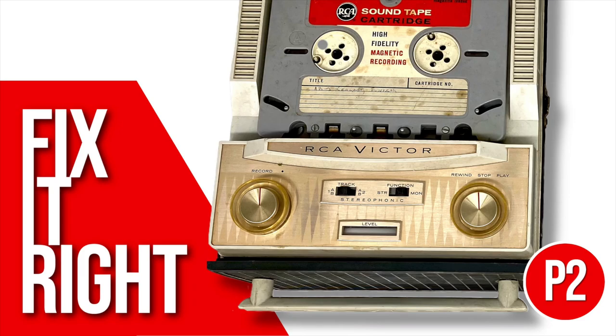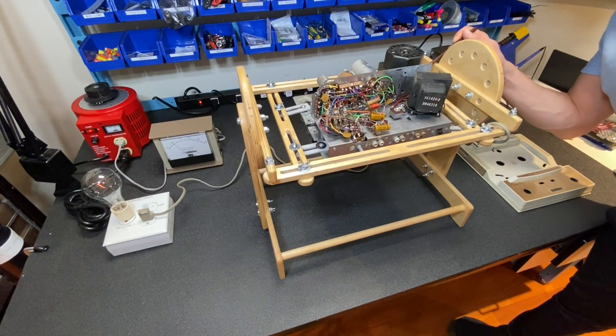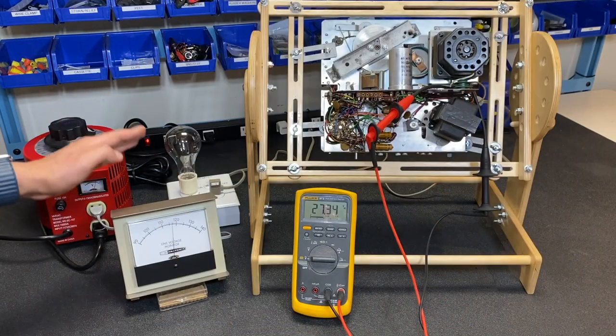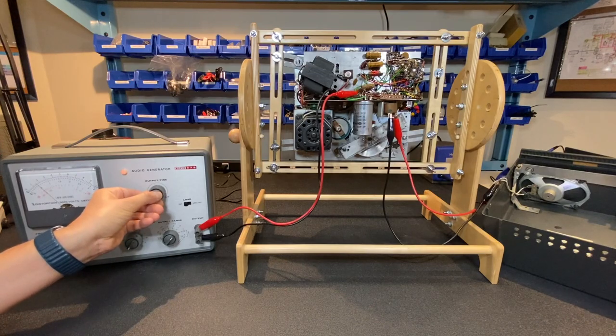Welcome to part 2 of my RCA sound cartridge series. In the last episode we confirmed that the motor, tubes, power transformer and output transformer are working but we still had no sound from the player.